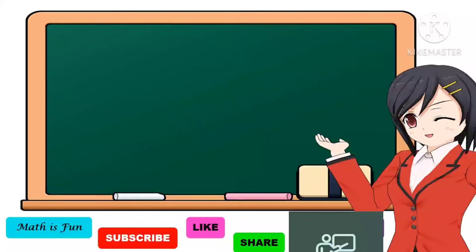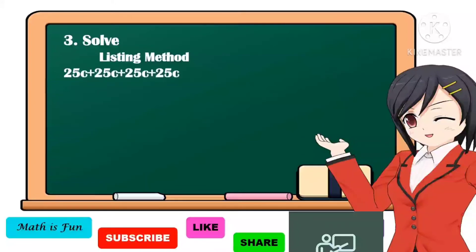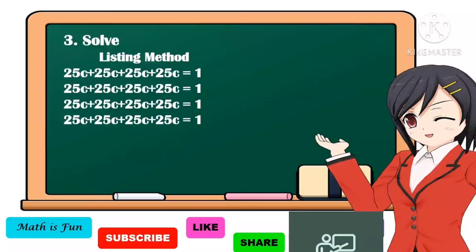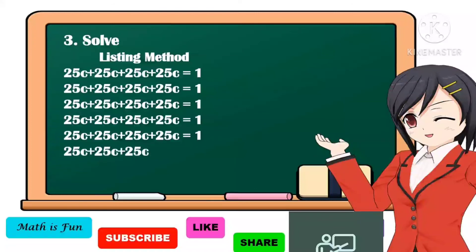The next step is to make a plan. To get the answer, we're going to use the listing method or mental computation. Let's carry out the plan and solve the problem. We're going to list 25-centavo coins in 1 peso. As we know, there are 4 twenty-five-centavo coins in 1 peso. So we're going to count: 4, 8, 12, 16, 20, 24. There are 24 twenty-five-centavo coins equal to 6 pesos. Using mental computation: 4 twenty-five-centavo coins per peso times 6 pesos is equal to 24.